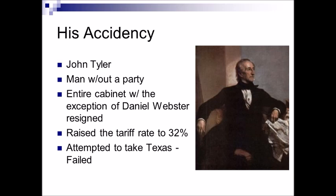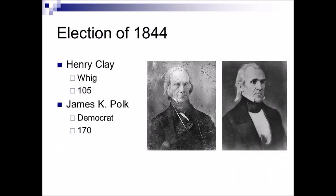John Tyler is not going to have a good presidency. He'd like to run for a second term, but there's no way he's getting his party's nomination. So in 1844, the Whigs nominate Henry Clay, and the Democrats nominate James K. Polk, who was almost unknown outside of his home state of Tennessee.